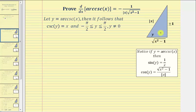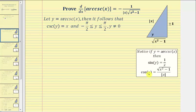Using the Pythagorean theorem, the adjacent side equals the square root of the quantity x squared minus one. Because the adjacent side of a reference triangle in the first and fourth quadrants is always positive, this is the principal square root. Also, since cosecant y equals x and cosecant and sine are reciprocals, sine y equals one divided by x. And since cosine theta equals the adjacent side over the hypotenuse, cosine y equals the square root of x squared minus one, divided by the absolute value of x.